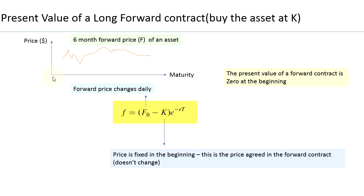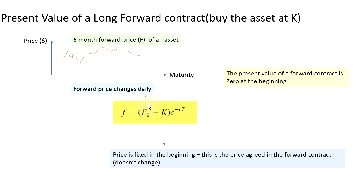T depends on when you calculate it. If you are calculating just after you enter into the transaction in early January, you have 12 months, so T will be almost 1 (since T is expressed in years). But if you are calculating in June, you have six months remaining, so T will be 0.5. However, your K will be the same throughout because it is the price you entered into in January — that is why we say the price is fixed at the beginning. K will never change whether you calculate the present value in January, February, October, or November. What will change is the forward price F, which changes daily based on market demand and supply.